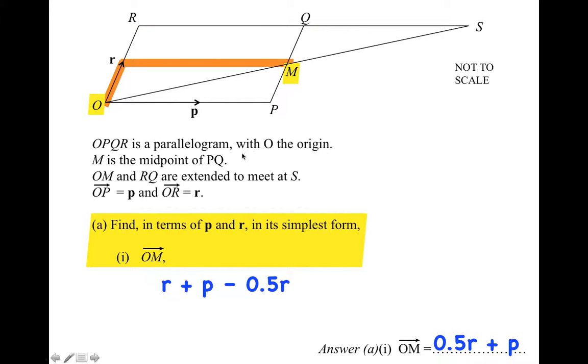We can see that if we just went 0.5R plus P directly, 0.5R there and then a P across the middle, it would be another way of getting from O to M.